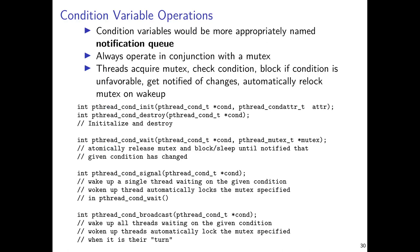Condition variables are notification queues or monitors. They're primarily used to indicate when some condition has occurred in a program that may be of interest to certain threads but not all. The basic API looks very much like mutexes — you initialize one, destroy it when finished, and have functions to wait on the condition. You pass both a condition variable and a mutex to pthread_cond_wait, and separate functions allow you to release the condition variable after notifying that something has changed.